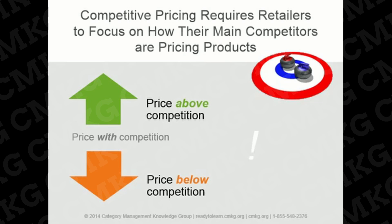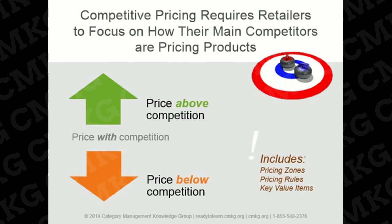In competition-oriented pricing, the retailer needs to look at how their main competition is pricing their products and then set their prices accordingly. There are several things that retailers need to consider when developing a competitive pricing strategy, including pricing zones, pricing rules, and key value items. Let's review each of these in more detail.